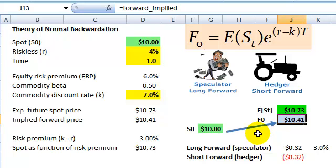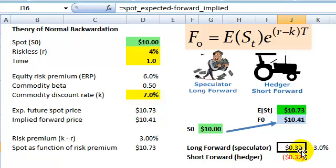In order for me to entice you to take a long position on the forward, you need an expected profit. So in this case, you agree to purchase the commodity in the future with delivery price of $10.41. Let's say the expected spot is realized. Then, then you will pay $10.41 and receive a spot commodity worth $10.73. The difference here is $0.32.